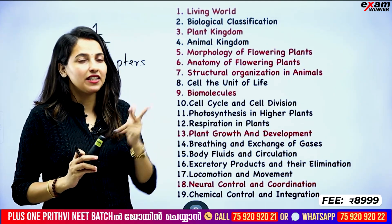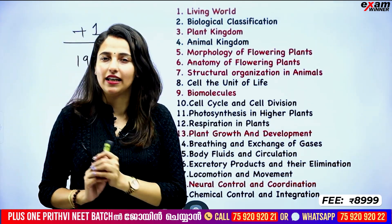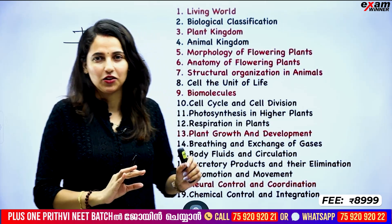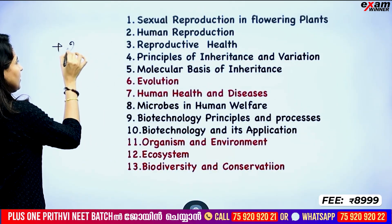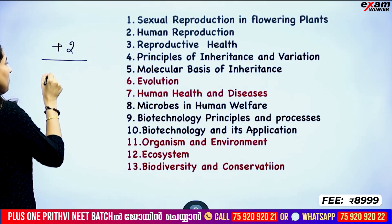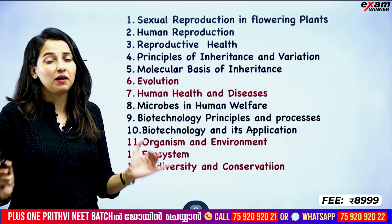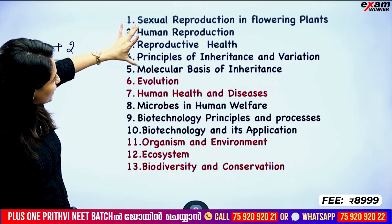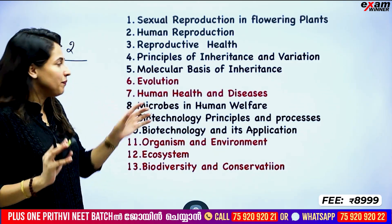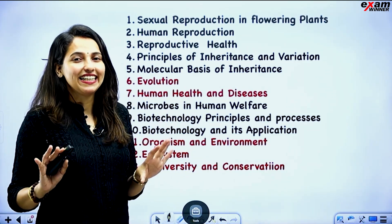Our physiology and animal physiology — the majority of portions have no changes, no additions or deletions. All these red color chapters are: living world, plant kingdom, morphology, anatomy, structural organization in animals, biomolecules, plant growth and development, neural control and coordination. Now we have to look at more changes. Plus 2 chapters — we have to do more and delete, and you will learn 13 chapters.